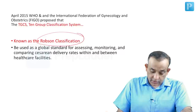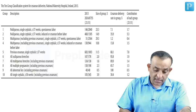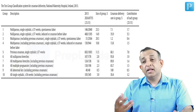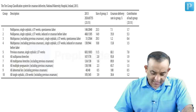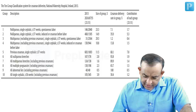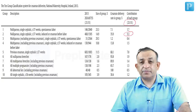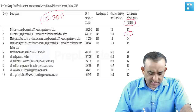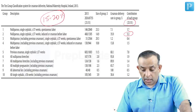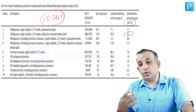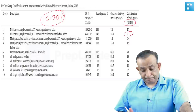Robson's classification is also known as the 10-Group Classification System. It was advocated by the WHO in 2015 and accepted by the International Federation of Gynecologists and Obstetricians. It is a global standard for assessing, monitoring, and comparing caesarean delivery rates within and between healthcare facilities. A good caesarean rate for any tertiary hospital should not exceed 15–20%.